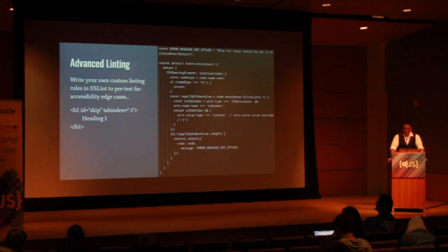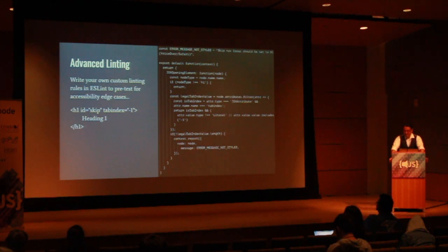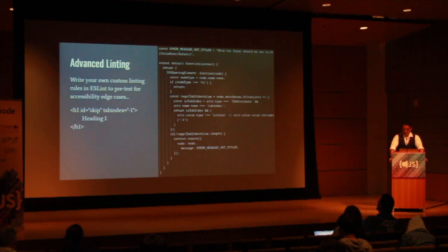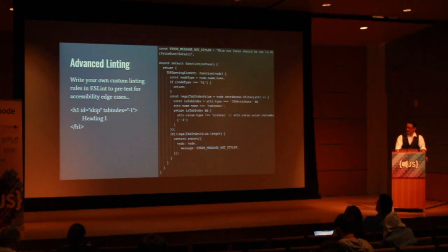As you get more experience with accessibility issues, you can write your own linting plugins for ESLint to pre-test for accessibility edge cases. This could be a pattern that you or your accessibility team have discovered is a best practice that you want your teams to always be aware of. In this example, the ESLint rule on the left is checking that the H1 element has a tab index of negative one. The skip nav is a link that allows the user to skip past the navigation to get to the main content, but there's an issue in VoiceOver in Safari on mobile where that doesn't work. You need to use JavaScript to direct the focus to an H1 element. This linting rule ensures that the H1 has the appropriate attribute with the appropriate value to accept that focus.